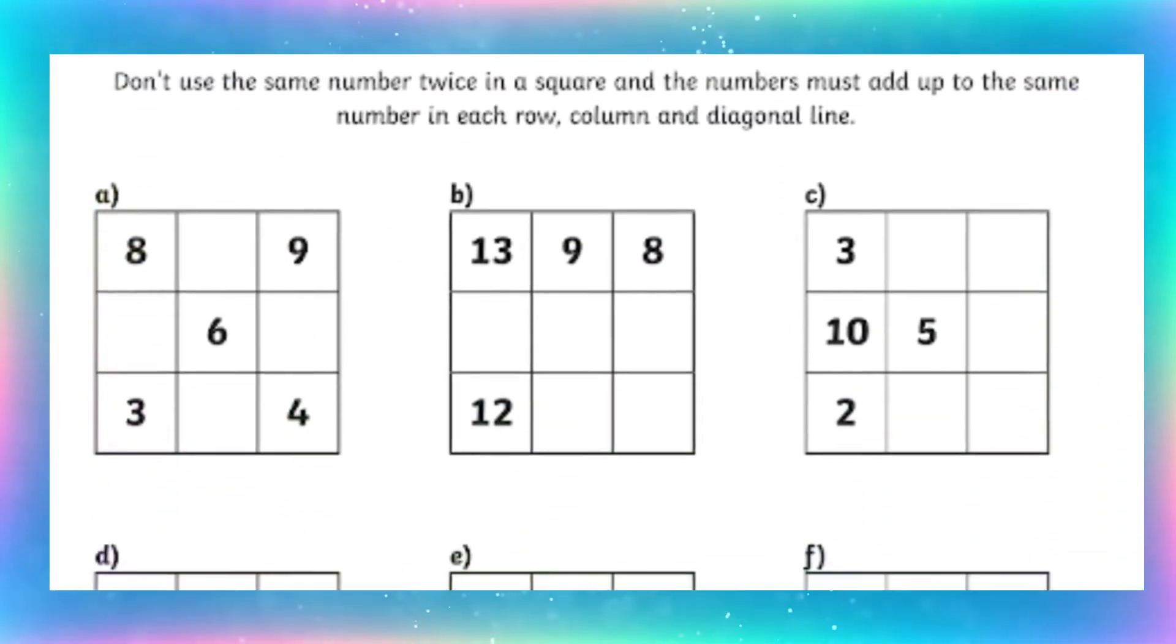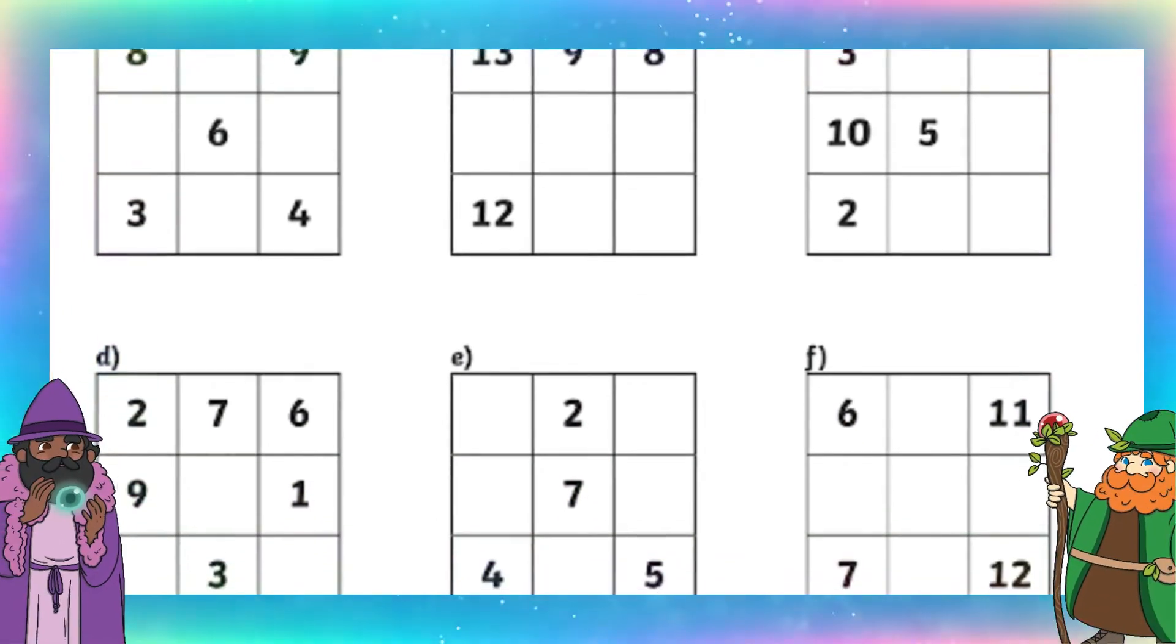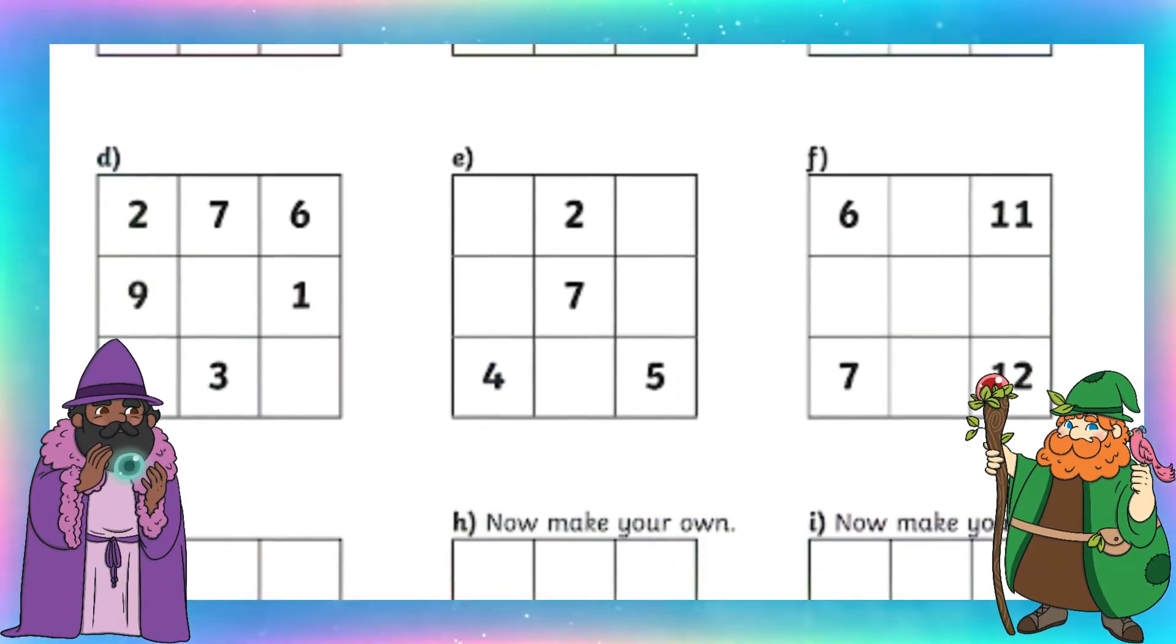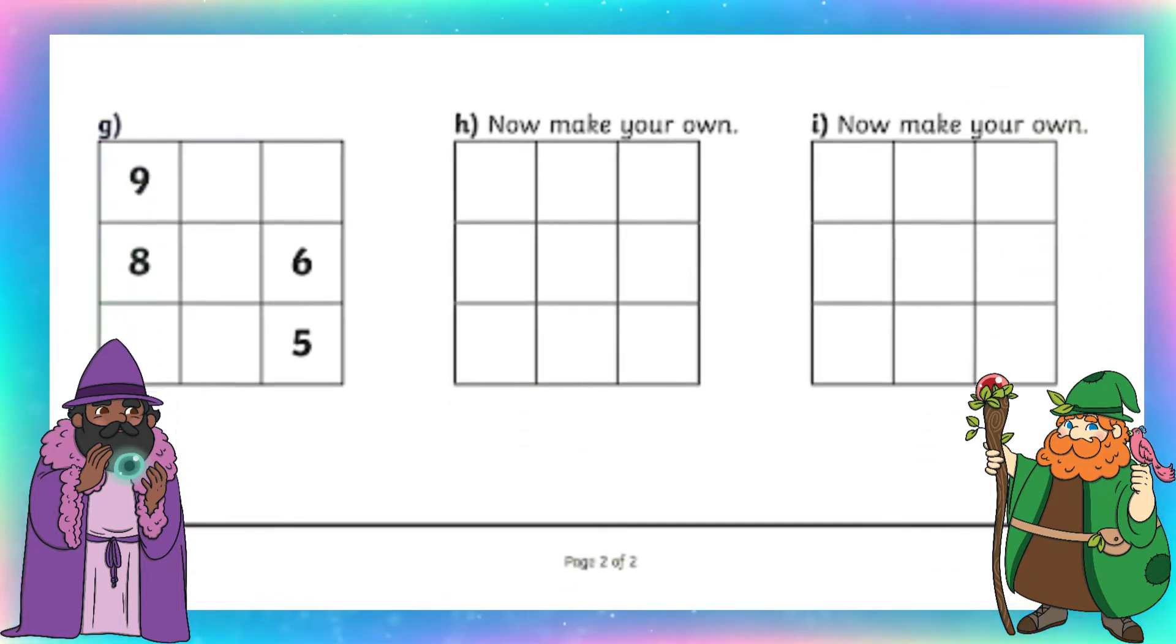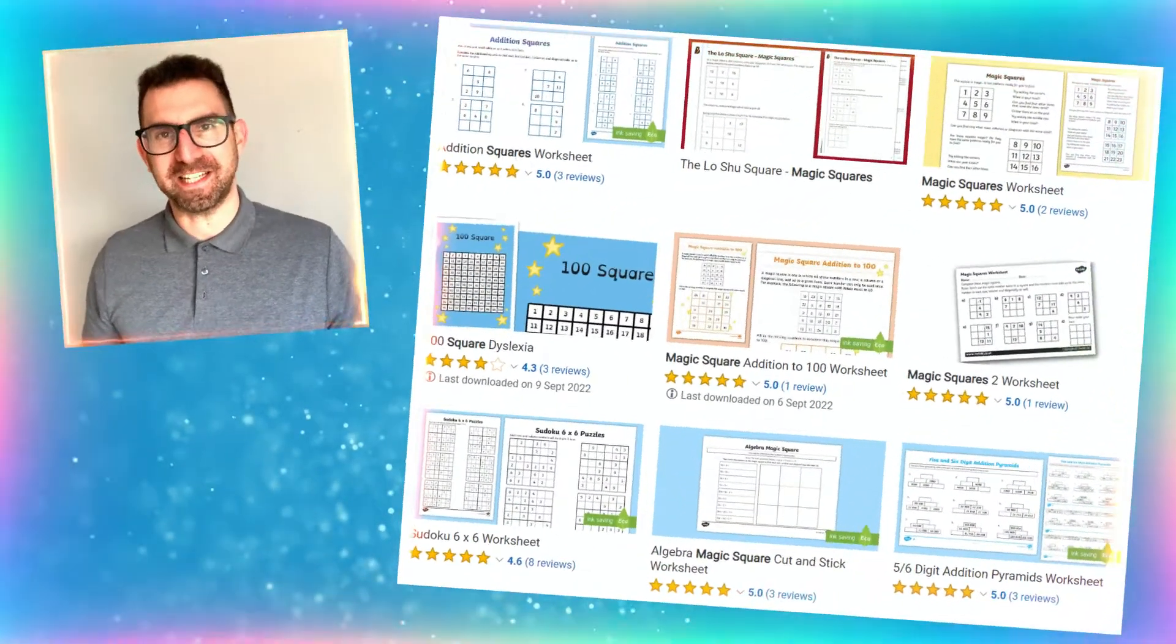See if your children can work out the missing numbers to complete the equations on our magic squares worksheet. It's easily printable or editable online if you want to save on paper. It's a perfect resource for teaching a Key Stage 2 Maths class.